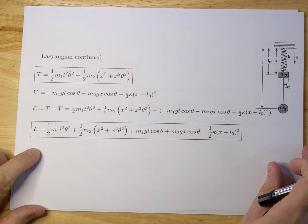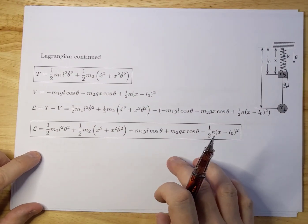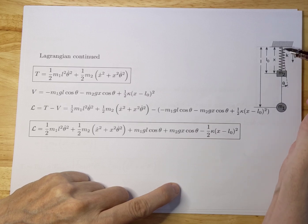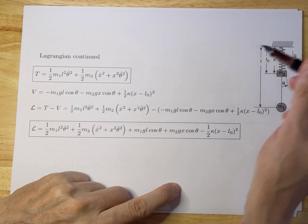Now let's work on the potential energy of the system. There are three different potential energies: the spring has potential energy, M1 has potential energy if it goes up, and so does M2 if the pendulum goes up a little bit, the potential energy will reduce a little bit.